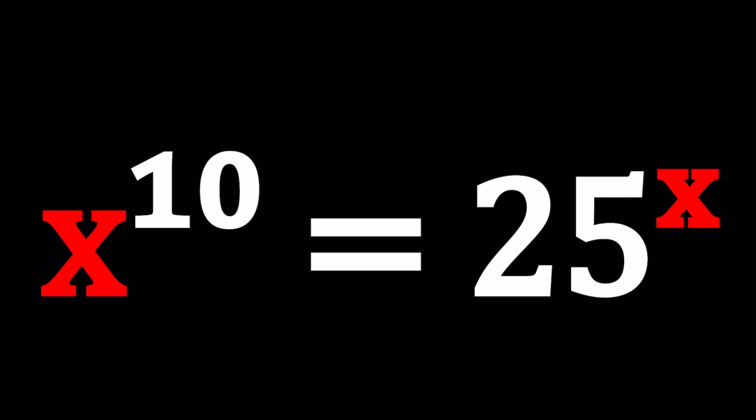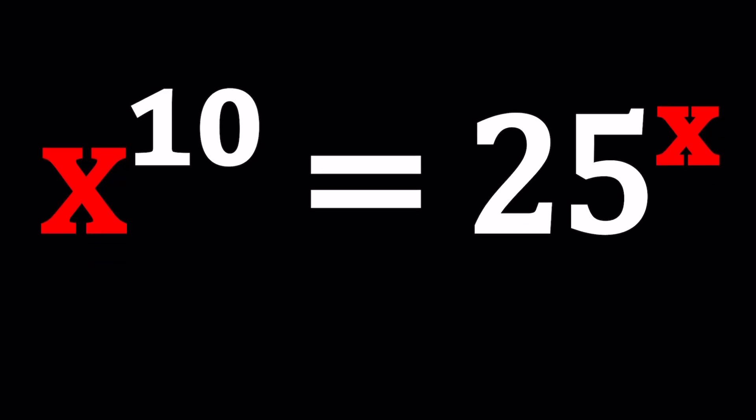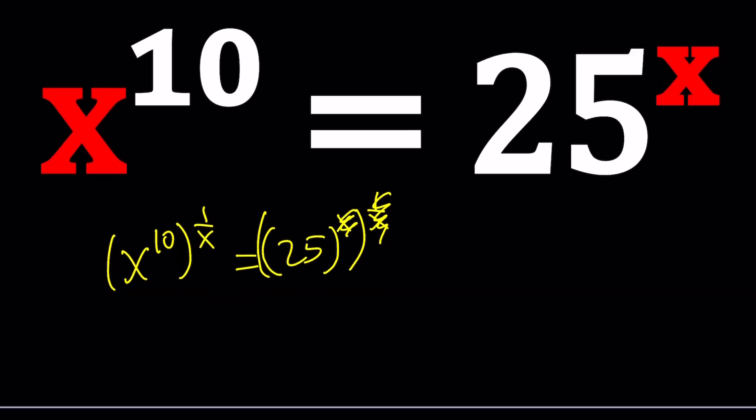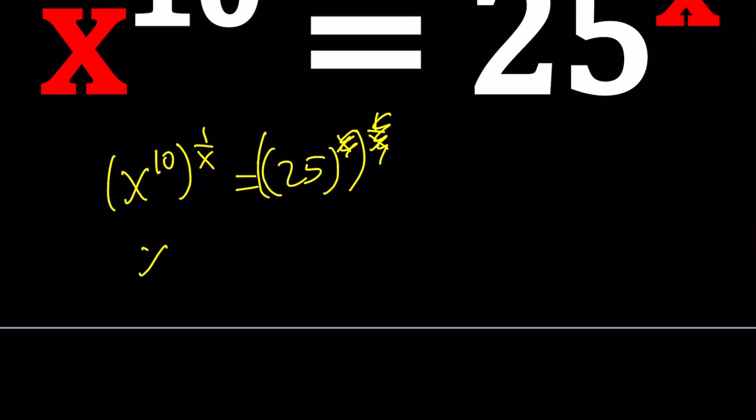First of all, I noticed that I can simplify this expression. Let's go ahead and raise both sides to the power of 1 over x. My goal here is to put the x's on the same side, because on the right-hand side, x cancels out with 1 over x. Obviously, x equals 0 is not going to satisfy this equation, so we don't have to worry about it. This becomes x to the power 10 over x equals 25.